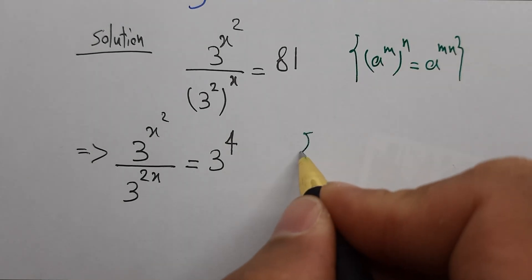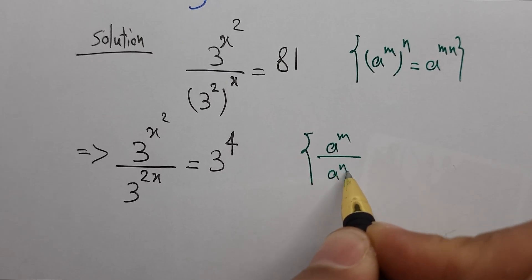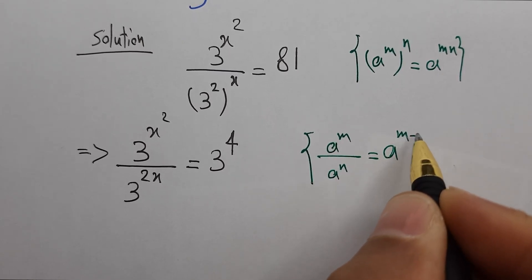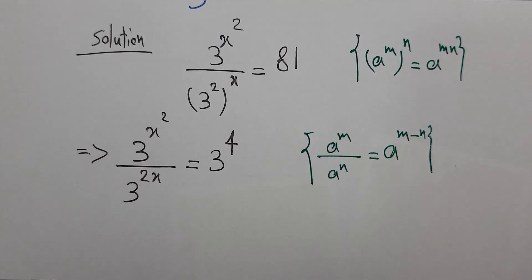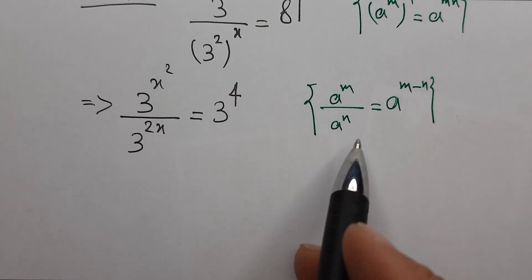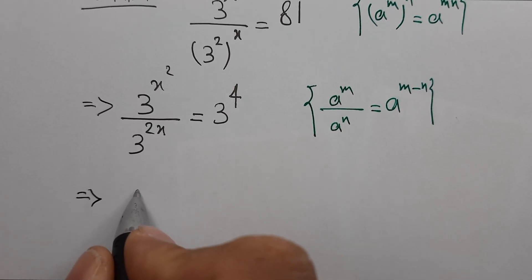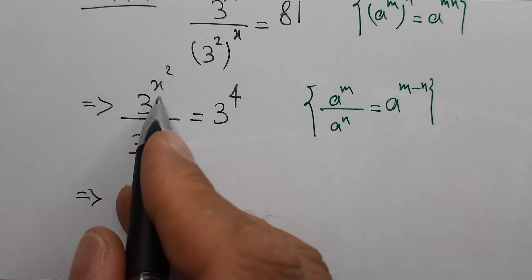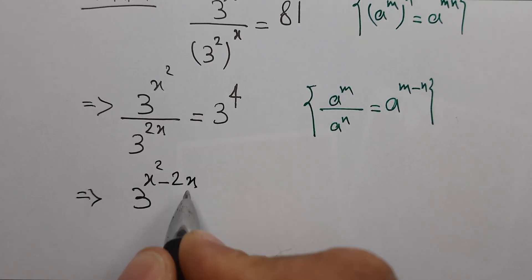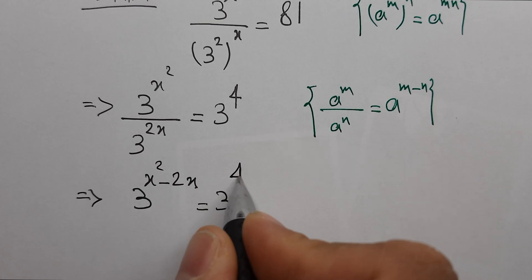As you know, a power m over a power n equals a power m minus n. According to that, we can write here 3 power x squared minus 2x equals 3 power 4.